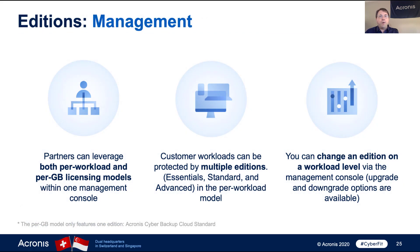Within the editions, there are different ways customers can buy. As a partner, you can leverage two pricing models: a per workload model or a per gigabyte model. The per gigabyte model only applies to Acronis Cyber Backup Cloud Standard, but per workload is available across all four editions. Also, an individual customer can have multiple editions — some devices might only need Essentials, some Standard, some Advanced. You can change the edition on a workload via the management console, and it will automatically update the functionality on the target machine, making it easy to upgrade customers as needed.